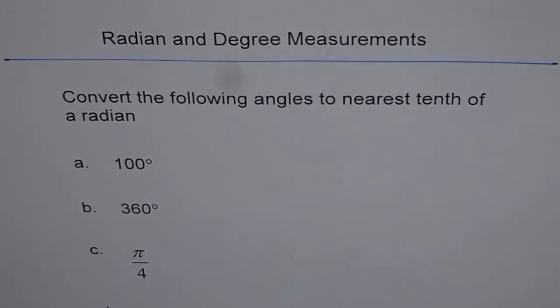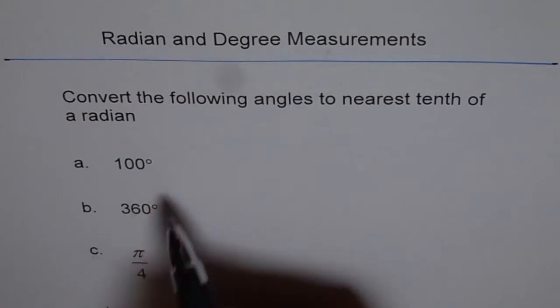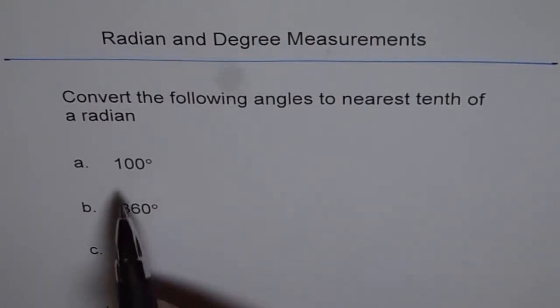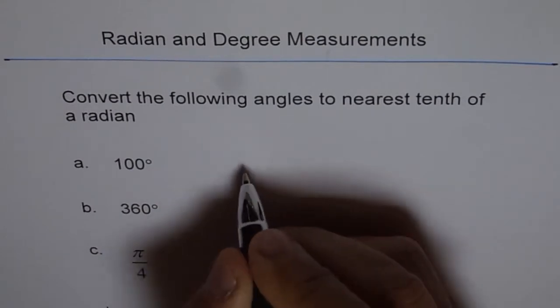To convert to radians, what should you do? So we have degrees and these ones are already in radians, right? So here we just need to write it in tenth of a radian. Degrees to radians is very simple.